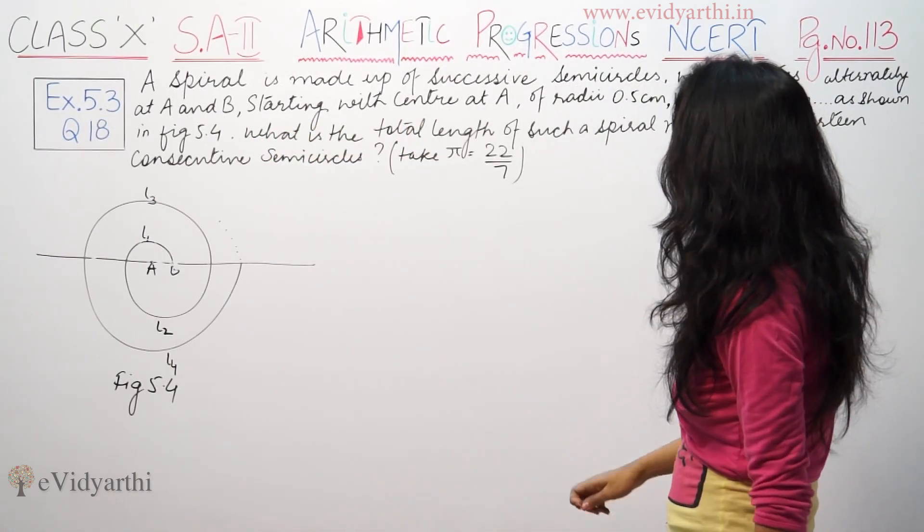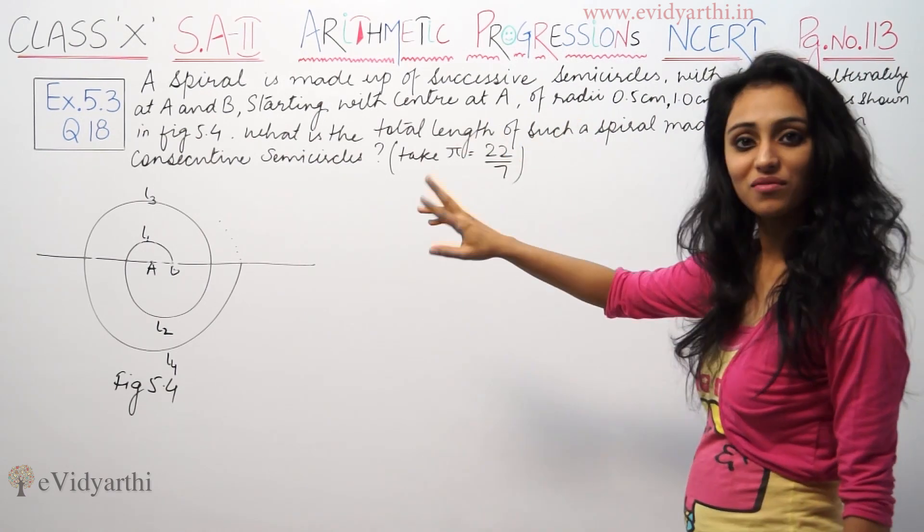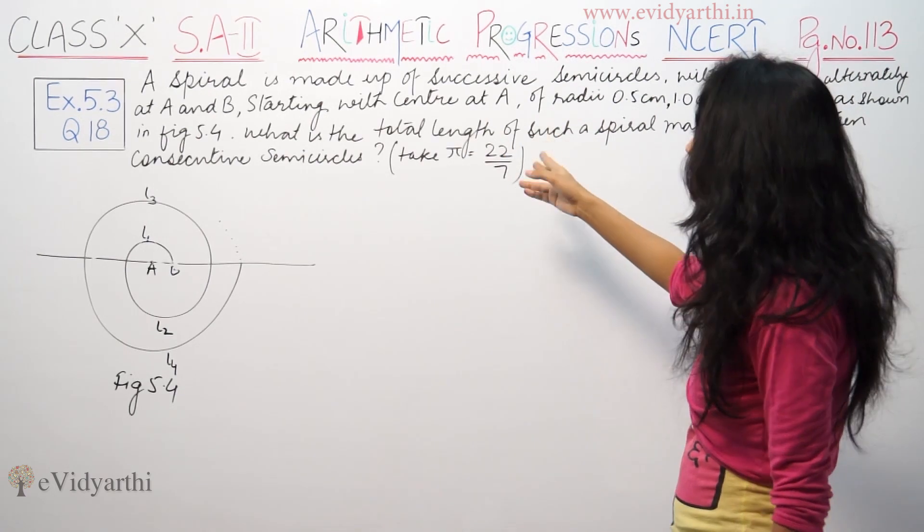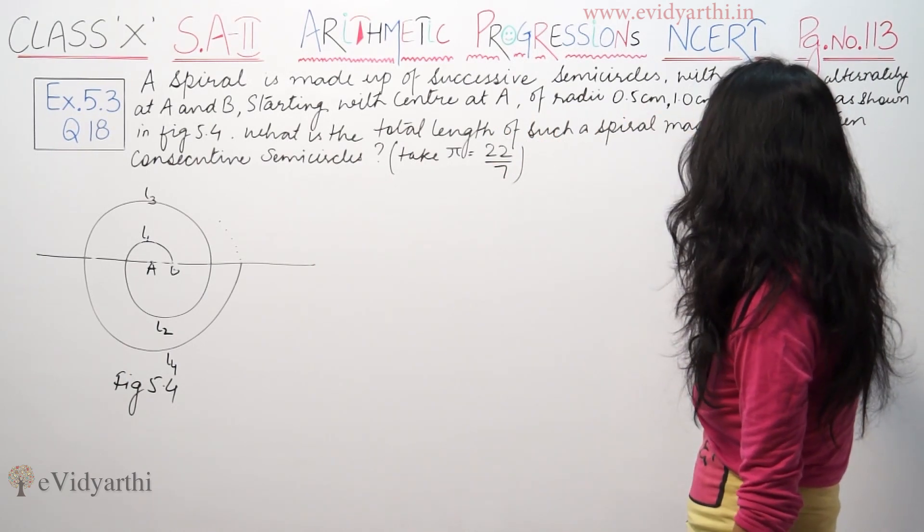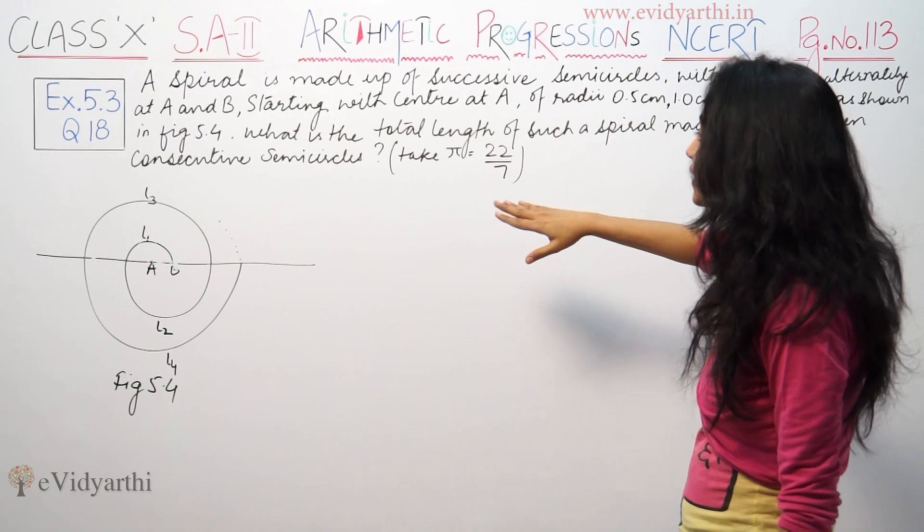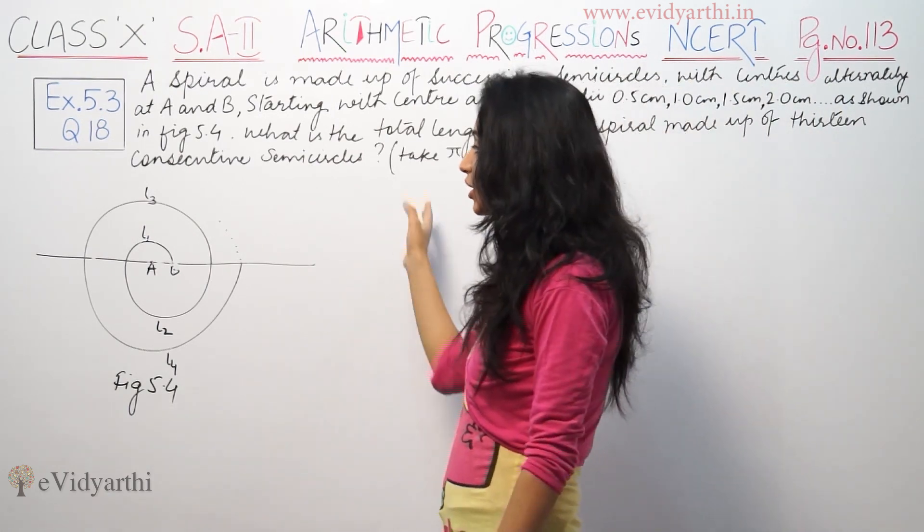Starting with center at A, the radius is 0.5, then 1.0, then 1.5, then 2.0 as shown. So what is the total length of such a spiral? 13 consecutive semicircles are here. Total length is required.